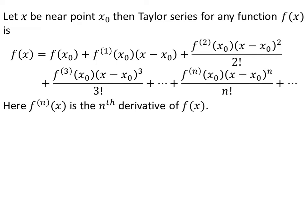Let x0 be any reference point near which we want to find the Taylor series of a function, and let x be any point near x0. The Taylor series for a function f is given as the value of f at x0, plus the first derivative of f at x0 times (x minus x0), plus the second derivative of f at x0 times (x minus x0) squared upon factorial of 2, plus the third derivative of f at x0 times (x minus x0) cubed upon factorial of 3, plus so on up to infinity.